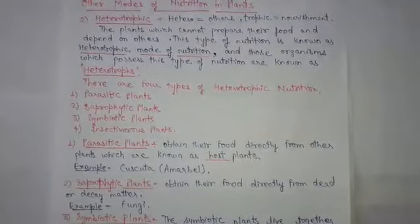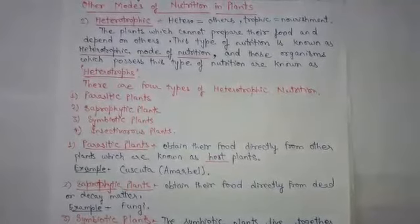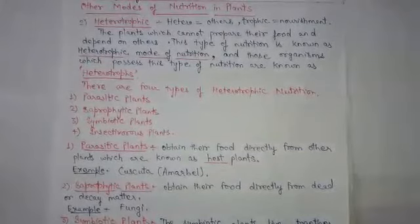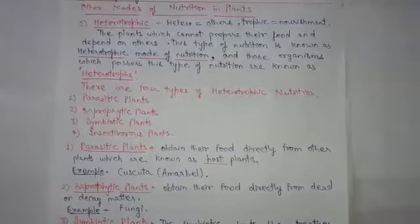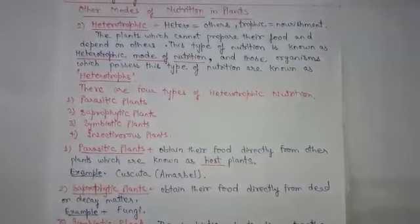When you go to a vegetable shop, you might have seen packets of mushroom sold in it. Besides that, sometimes you may also have seen fluffy umbrella-like patches growing on the soil, especially in rainy season.